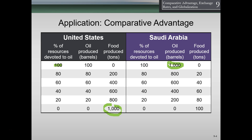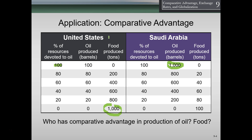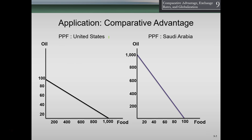This happens to be the case where there is both an absolute advantage and a comparative advantage. But remember, that doesn't necessarily have to be the case. Even if the U.S. happened to be better at producing both goods, as long as the opportunity costs differ, even if one country has an absolute advantage in both areas, countries can generally still benefit from trade.